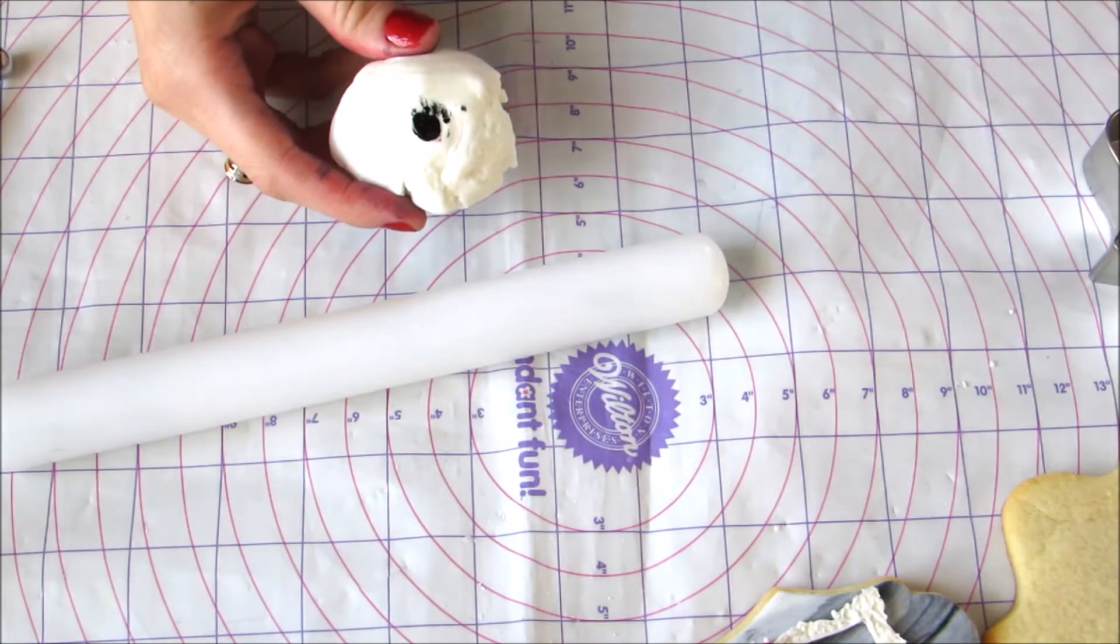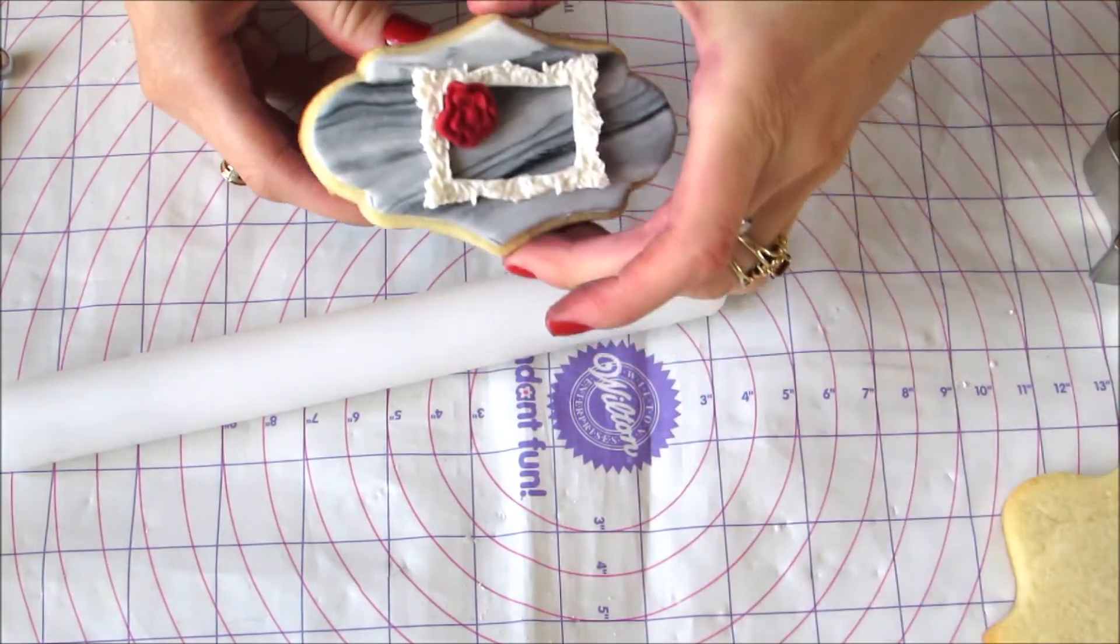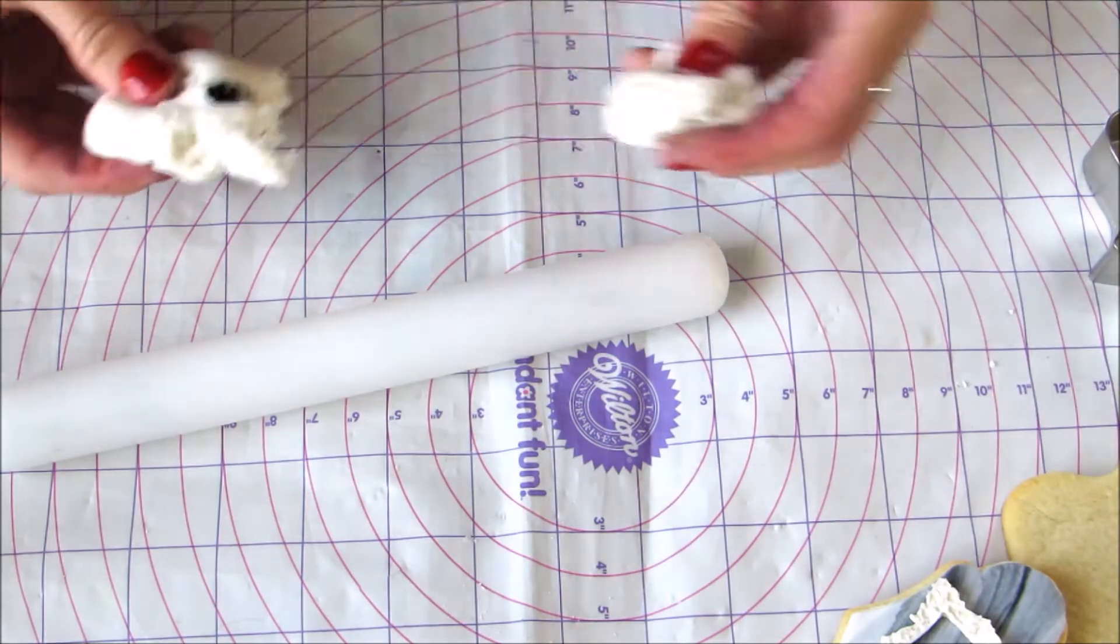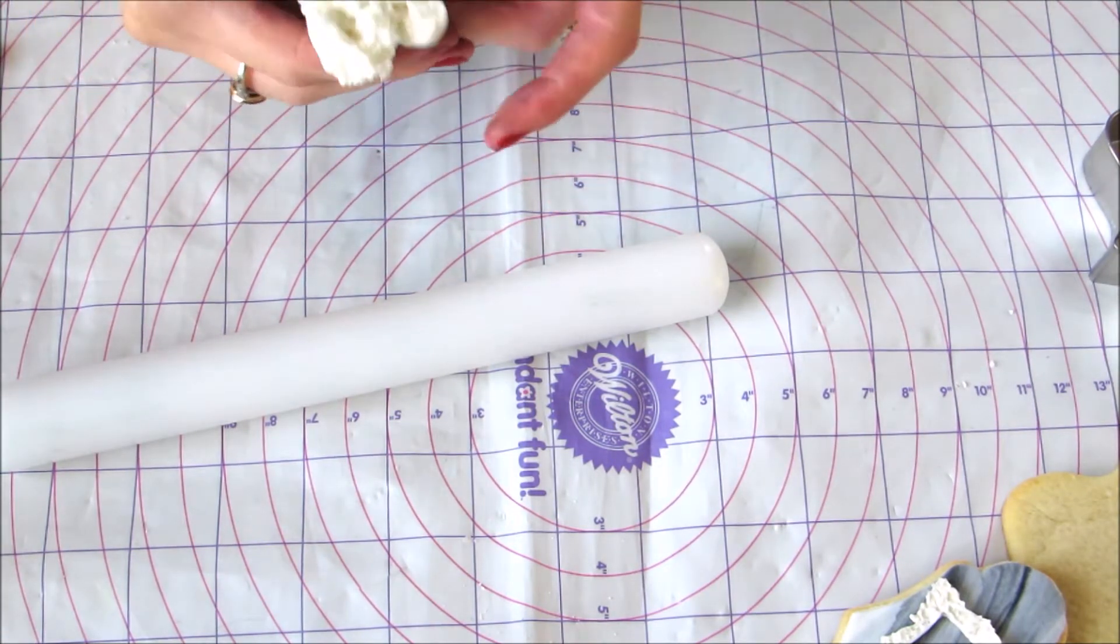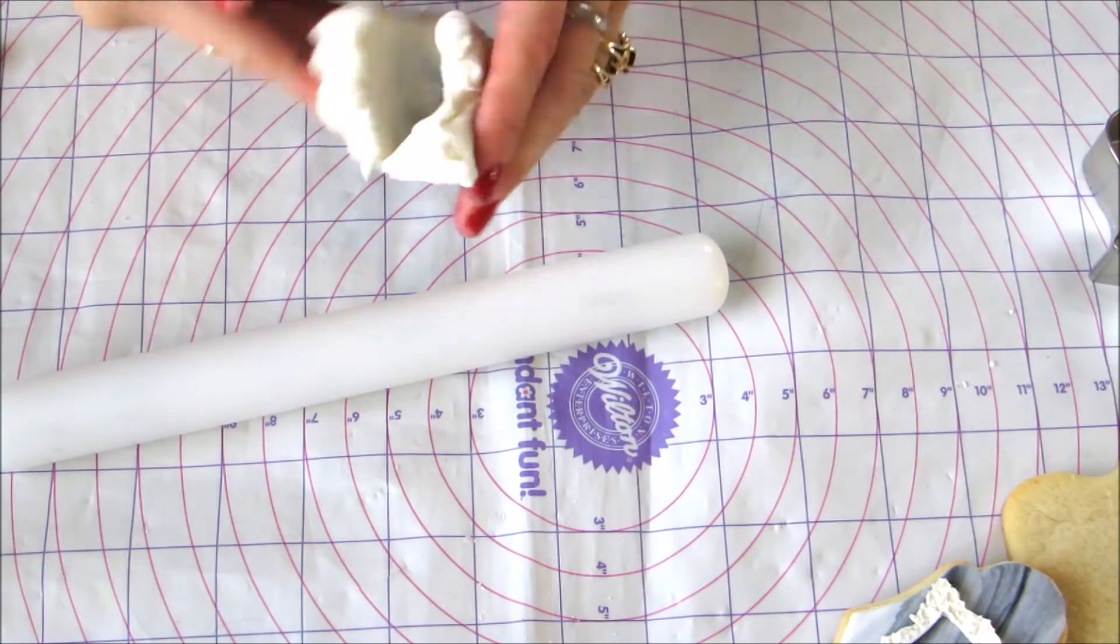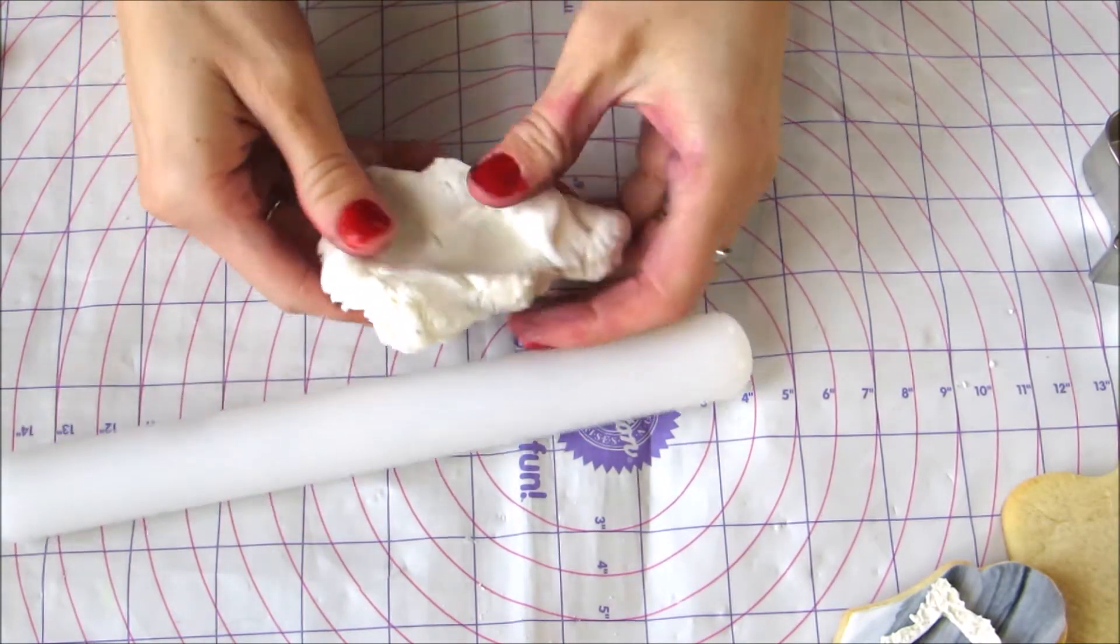I'm using black to create this effect, which is like a black-gray marble. You then want to twist it together and knead it. I'm trying to do it so I don't get black on my hands, but it didn't really work earlier.